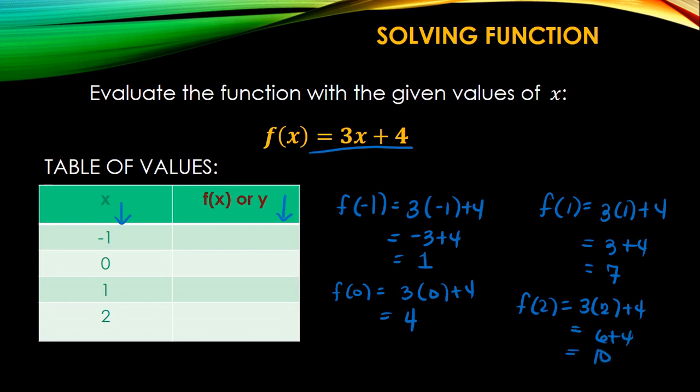So your function, or the range values here are 1. The output, if you input 0, the output is 4. If 1, it's 7, and 2, 10. So if you're going to write this one in an ordered pair, pair them like this: (-1, 1), (0, 4), (1, 7), and (2, 10). So that's how we solve the functions.